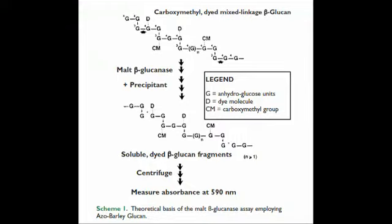These fragments are dyed, meaning that a color stays in solution and this color is directly related to the level of the malt-beta-glucanase activity. So after adding the precipitant and mixing the tubes thoroughly, the tubes are centrifuged. The color in the supernatant solution is then measured at 590 nanometers, and this is calculated back as malt-beta-glucanase activity by reference to a standard curve.